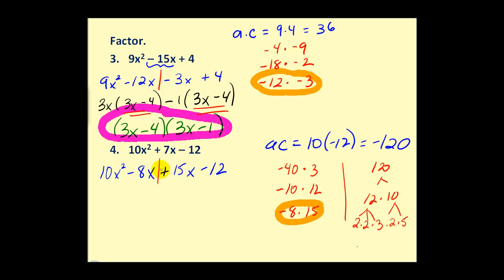Cut it in half and use grouping. The GCF of these two terms would be 2x. We'd be left with 5x - 4. And then here we have a common factor of just 3, so we'd have 5x - 4, which is good news because we have that common binomial factor again. So we can complete the factoring.